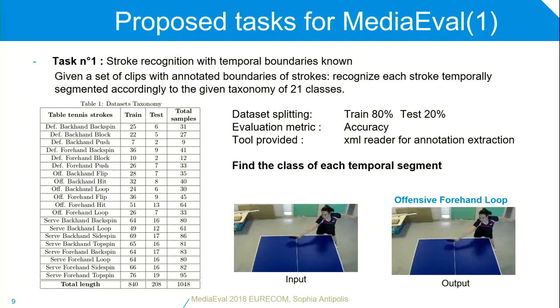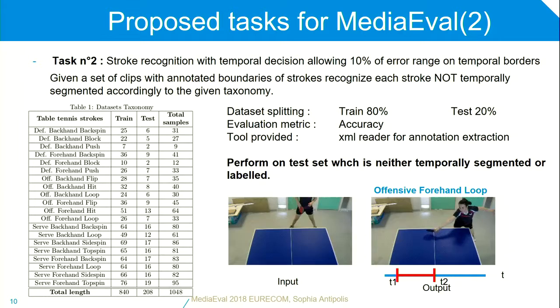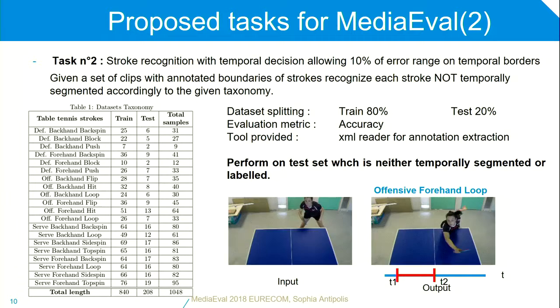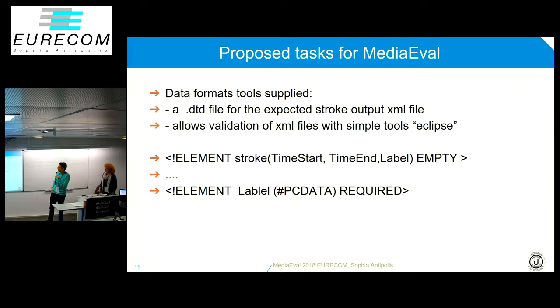The second task requires both classifying the stroke and providing the temporal segmentation, with a tolerance of 10% for the borders — the starting and ending of the gesture. This is much more complicated, because even professional teachers don't really agree on when a stroke starts and when it ends. What we will give to participants will be the videos as well as a DTD validation file so they can validate the XML file they submit for the task.